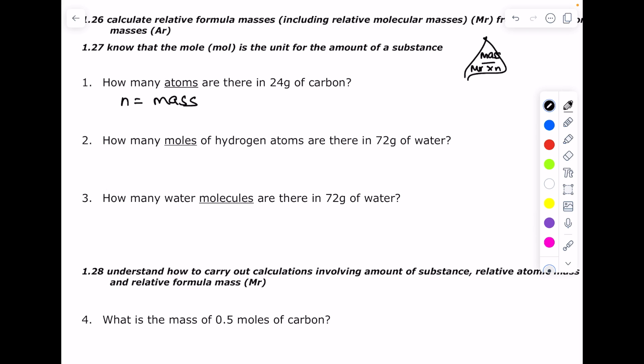Always write out your formulae. The mass we've been told is 24. The MR of carbon we get from the periodic table is 12. So we have 2 moles. They want the number of atoms, so we just multiply that by Avogadro's constant. So you get 1.20 times 10 to the 24 atoms.